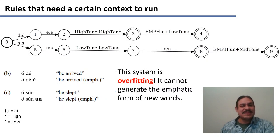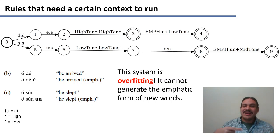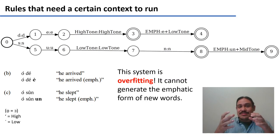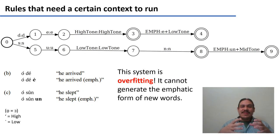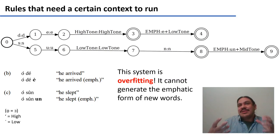One possible objection is: why not just make a huge finite state machine that knows the emphatic for every single word? However, if you did this, you would essentially be overfitting. You'd have two problems. First, you would need to generate an emphatic for every single word. More importantly, this system cannot generalize — it cannot create emphatics for new words because it has no rule for generating new ones. Since people invent new words every day in all human languages, this system would not be able to handle every Yoruba structure.